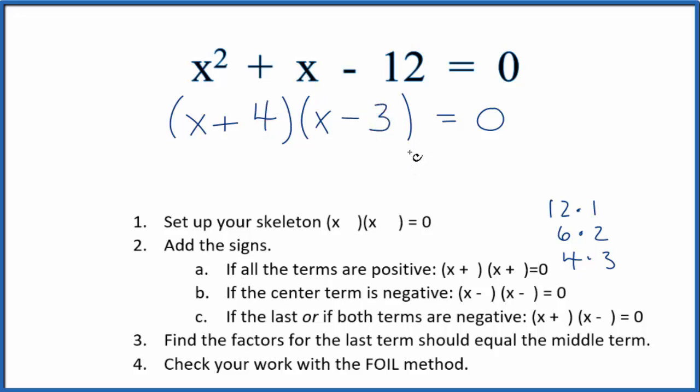Let's use the FOIL method to check our work. First term x squared, then the outside x times minus 3, that's minus 3x. Inside, that's plus 4x, and the last term, 4 times minus 3 is minus 12. That equals 0.